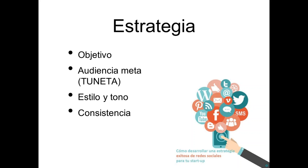Esta estrategia — saber qué queremos comunicar y a quién — nos va a ayudar a definir un estilo y tono en nuestras redes sociales. Con esto nos referimos al tipo de palabras, si va a ser un tono muy coloquial, si vamos a hablar de tú con nuestra audiencia, si les vamos a hablar en plural. Si es algo dirigido a jóvenes, probablemente un tono más amigable y coloquial sea el más efectivo. Pero si nuestra audiencia es de investigadores y científicos, el tono tendrá que ser mucho más formal y el lenguaje mucho más técnico.